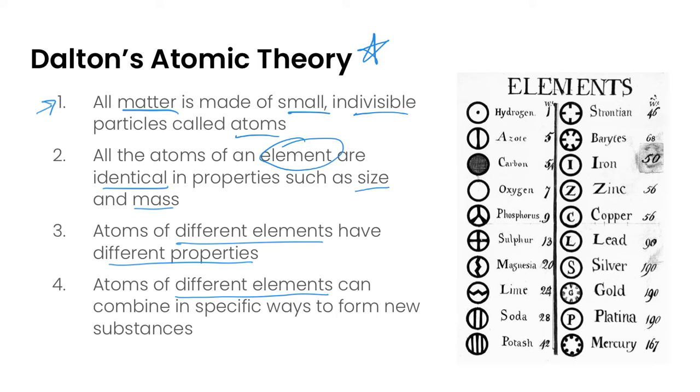From these four pieces to his atomic theory, he came up with this table of elements from 1808 that shows some of the different elements that he thought existed as atoms and what they look like. His model of the atom was just this big ball, which is termed the billiard ball model.